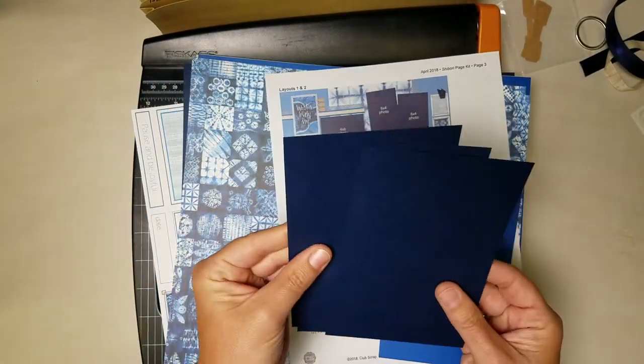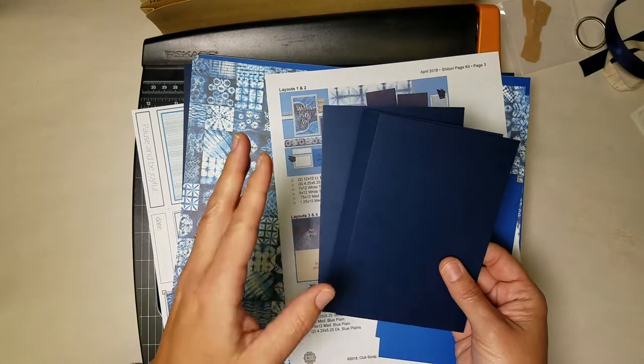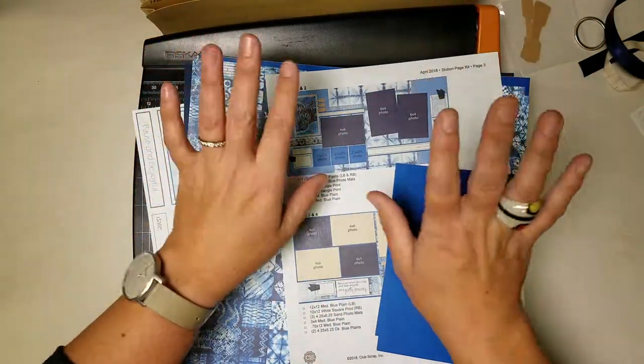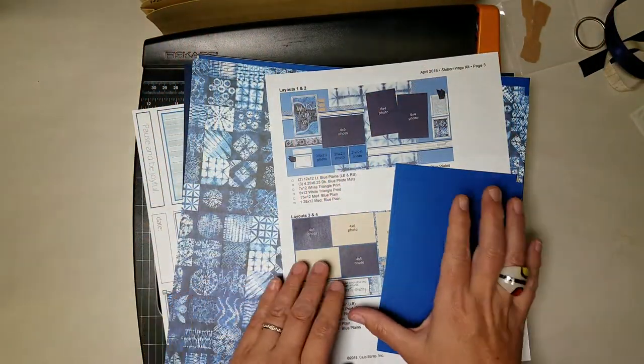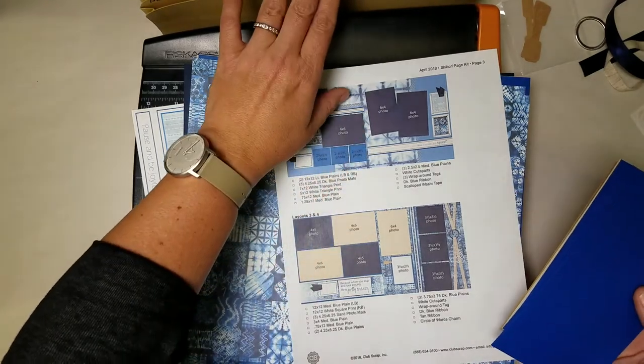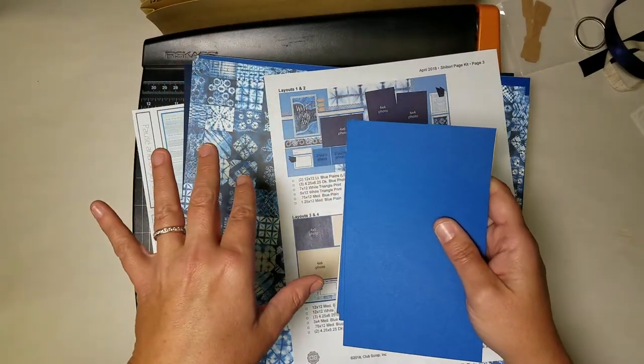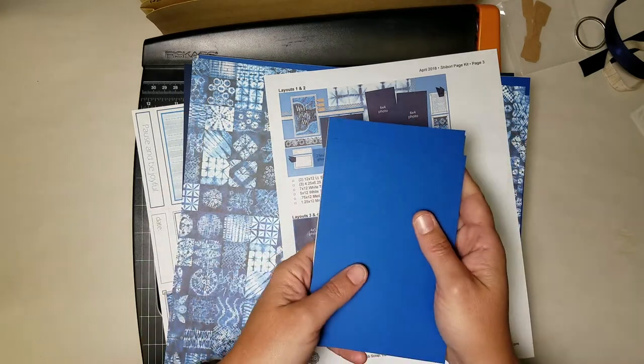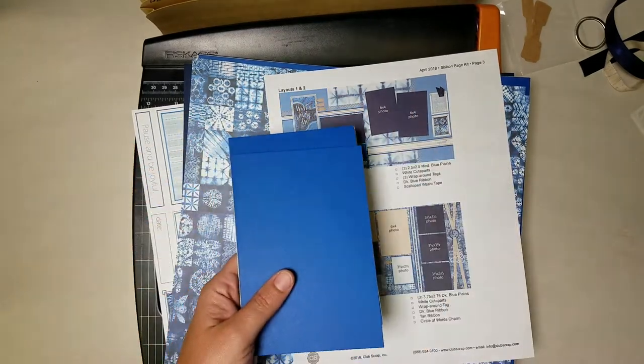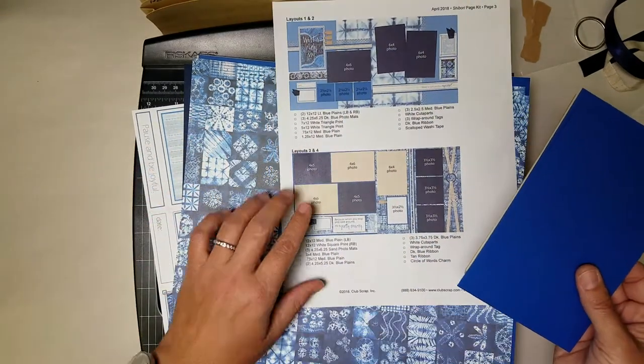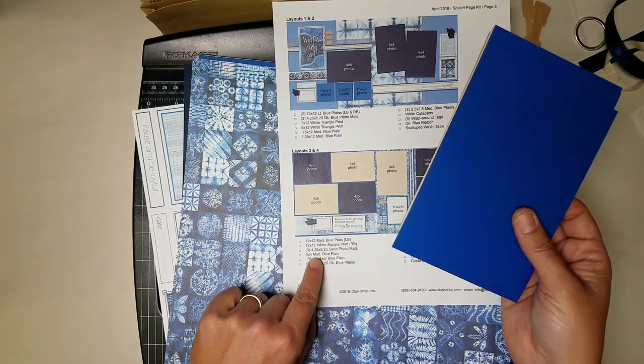I am organizing all of my items in four pockets in my accordion pocket file here. That goes for layouts one and two and if you don't have the accordion pocket file and you're a member you'll have access to a tutorial to make one for yourself otherwise just keep four separate piles one for each double page spread we plan to make.